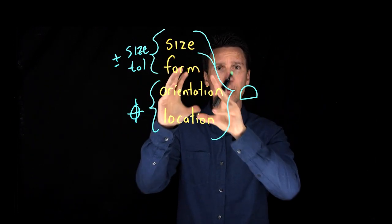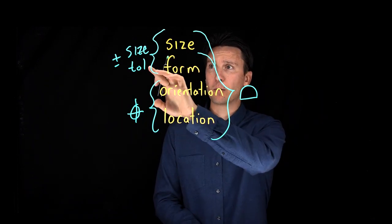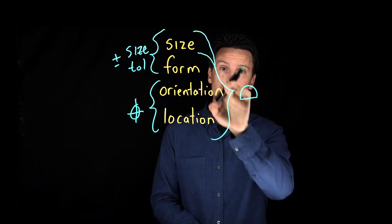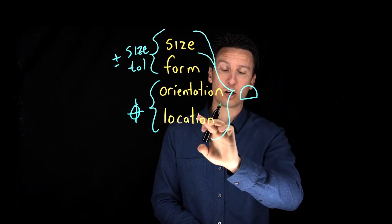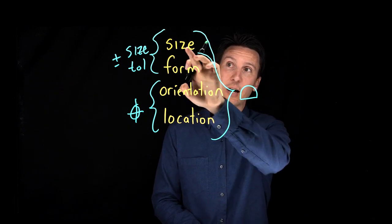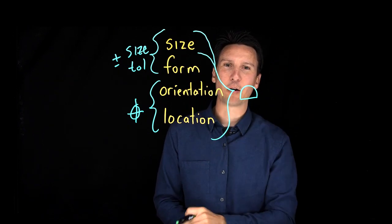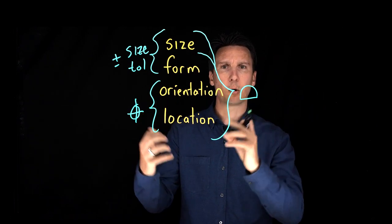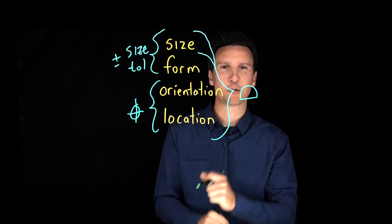It's because they handle most of our variation. For a feature of size we usually put a size tolerance and a position on it and if it's a surface we're going to use profile because that controls form orientation location and if it's a feature of size we can sometimes even use profile for that. So our most powerful symbols are all about position and profile. Definitely our one two punch for attacking those drawings.